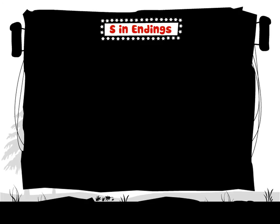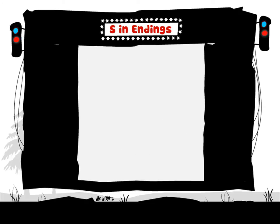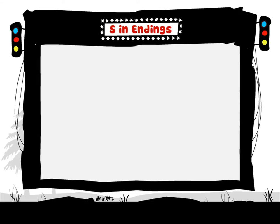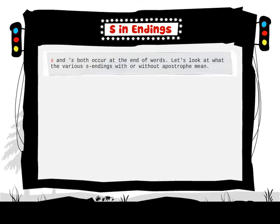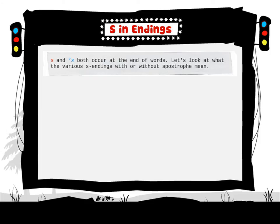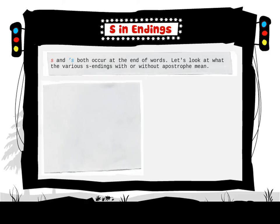S endings — S and apostrophe S — both occur at the end of words. Let's look at what the various S endings, with or without apostrophe, mean.